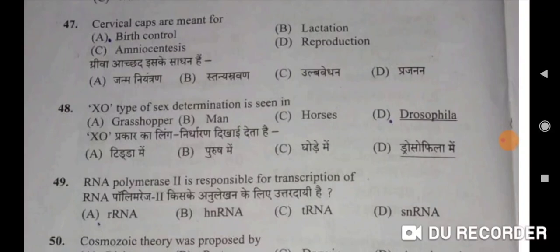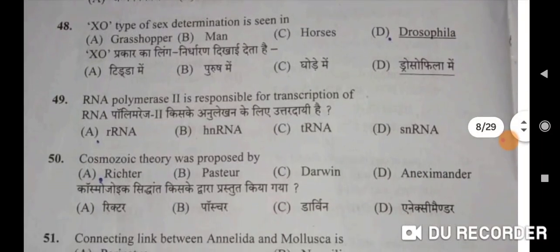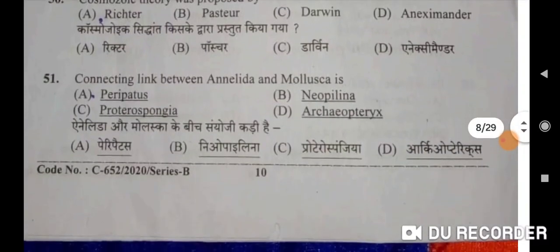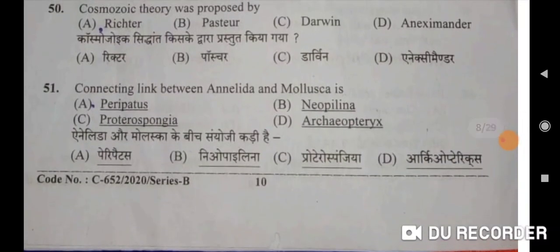Forty-eighth question: XO type of sex determination is seen in grasshopper — A will be the correct option. Forty-ninth: RNA polymerase 2 is responsible for transcription of hnRNA — Option B. Fiftieth: cosmozoic theory was proposed by Richter — Option A. Fifty-first: connecting link between annelid and mollusk is Neopilina — B will be the correct option. Annelid aur Mollusca ke beech sanyoji kadi hai Neopilina.